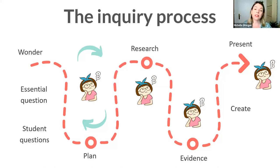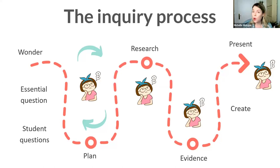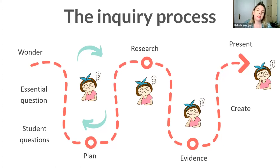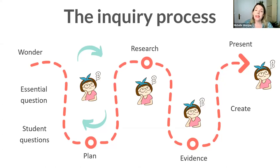The first stage is the wonder stage, and we start with something called a provocation — something that introduces the topic, sparks curiosity, and engages students. It could be an image, a video, a book, an object, or a toy. Then we introduce what we call an essential question or a driving question — a question that students will aim to answer by the end of the inquiry. Students can then develop their own questions, plan what they will do, and carry out some research.